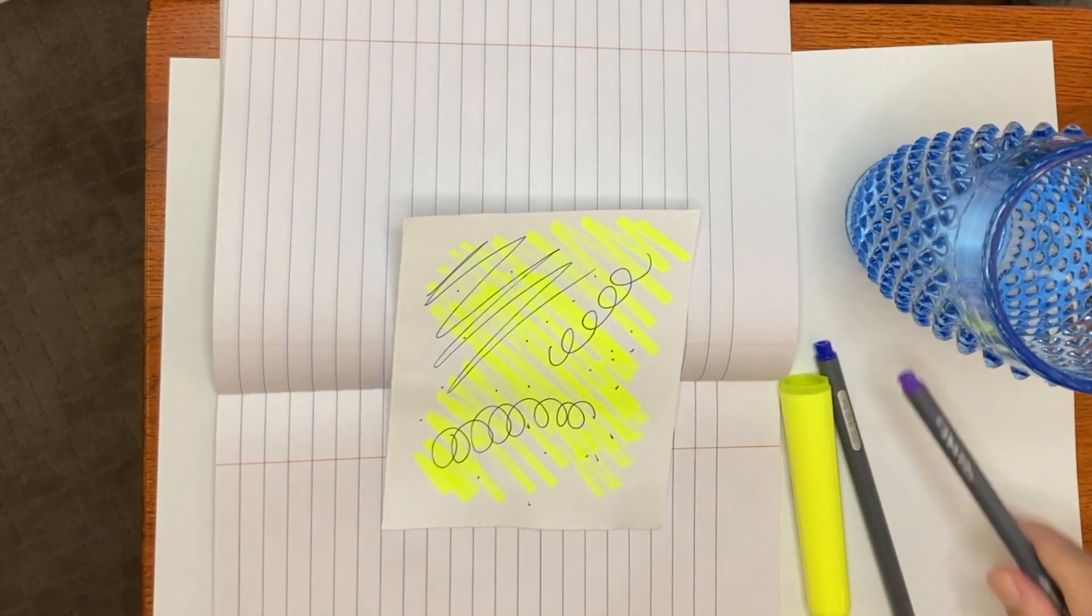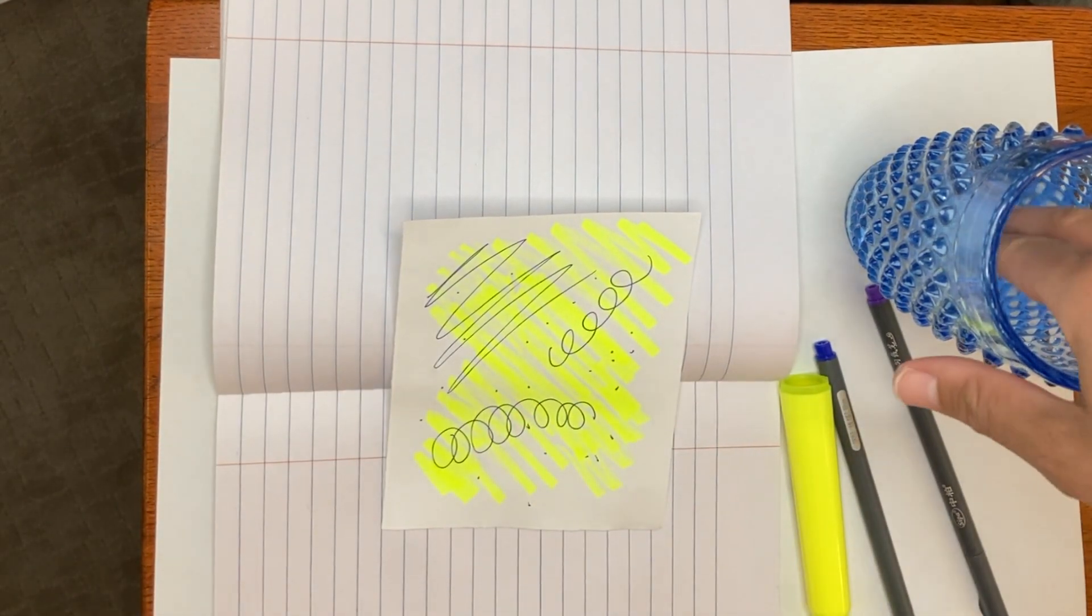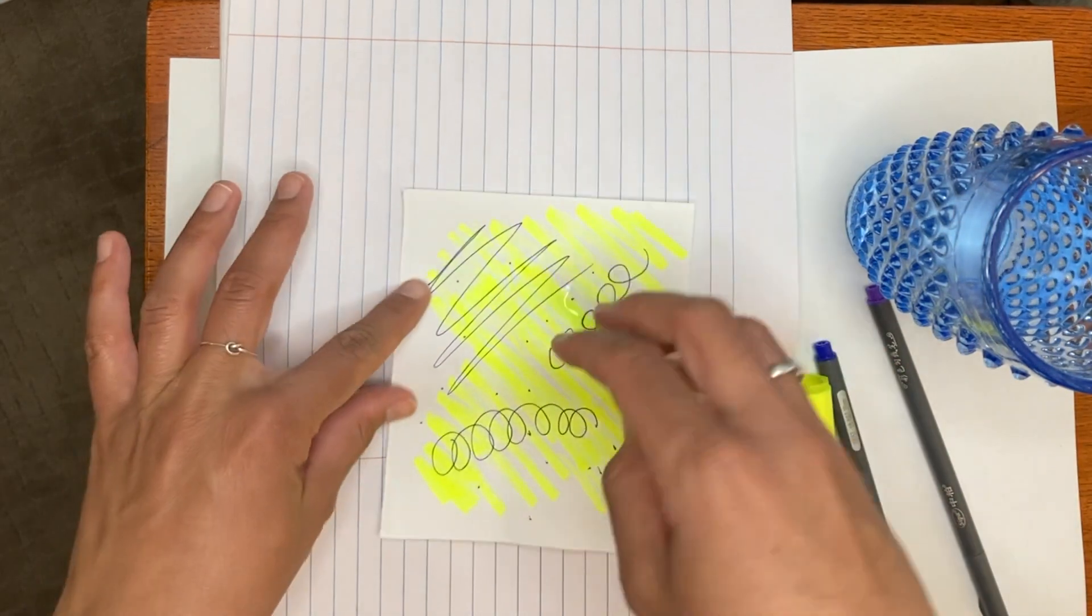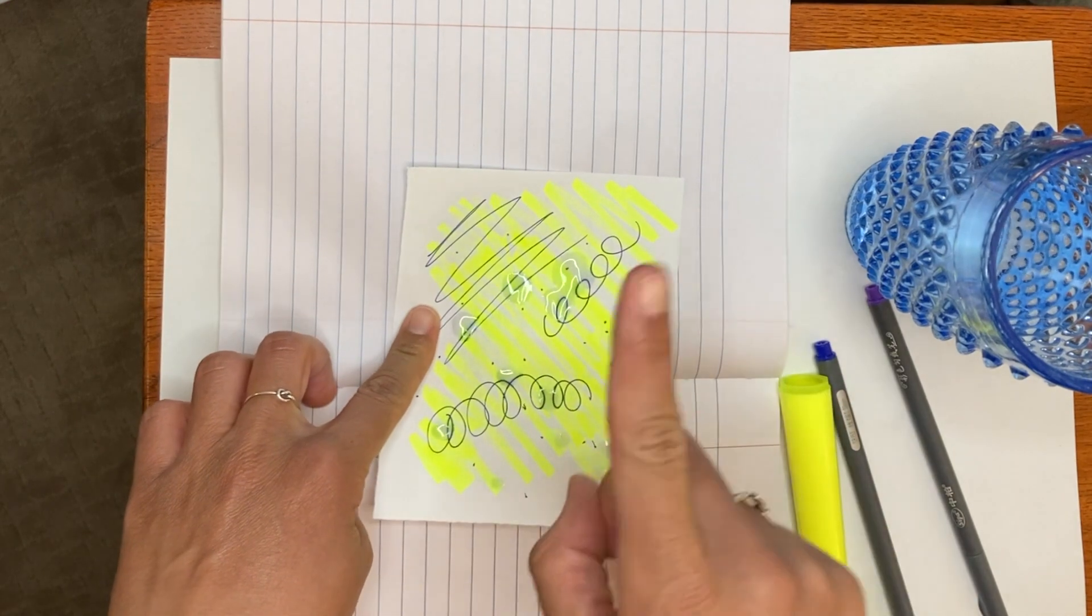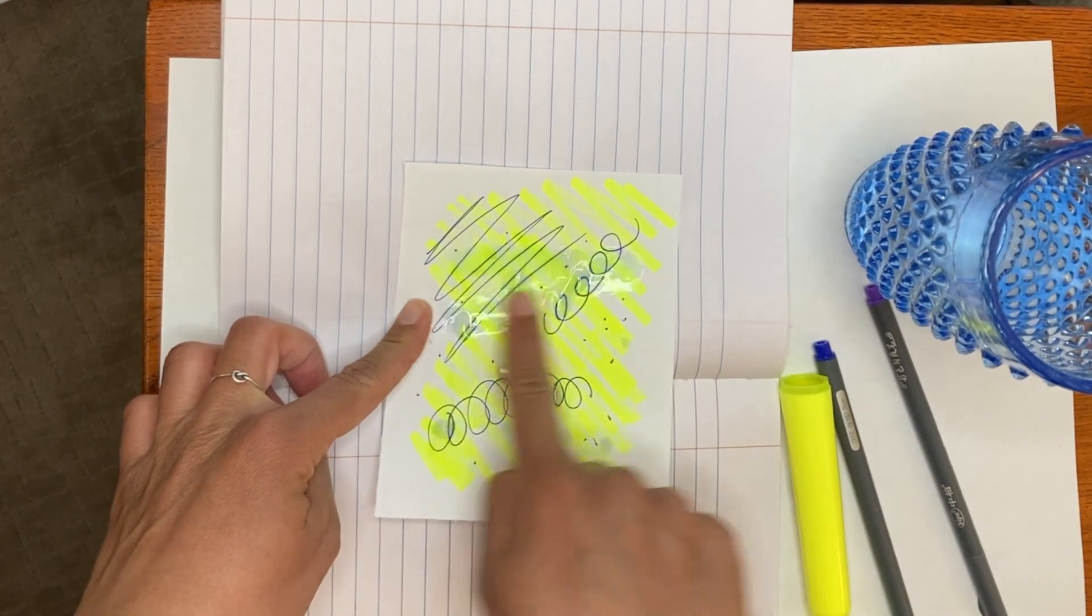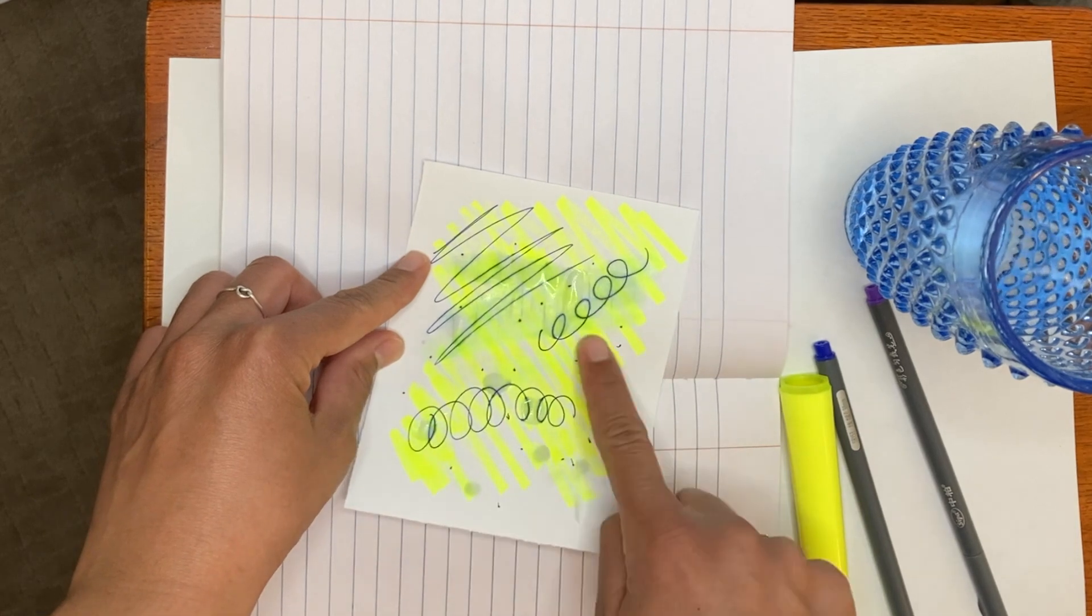Lastly, all you need to do is take a little bit of your water on your hand and drip a few dots of water onto the page. Then, with your finger, spread that water around and watch the colors seep together.